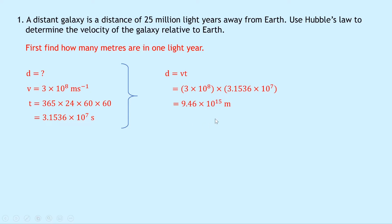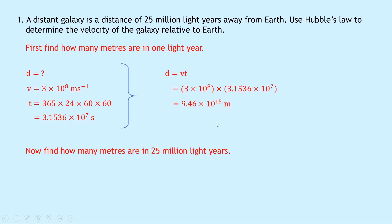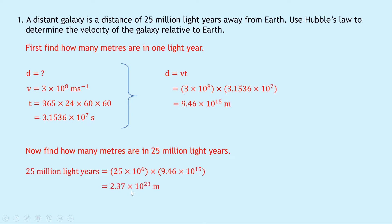Alternatively, you could just remember that one light year is equal to 9.46 times 10 to the 15 meters if it's easier. Now we want to find how many meters are in 25 million light years. We simply take our answer for one light year and multiply it by 25 million: 25 times 10 to the 6 times 9.46 times 10 to the 15, which gives an answer of 2.37 times 10 to the 23 meters. Now we're ready to use this distance in Hubble's law to determine the velocity of the galaxy relative to the Earth.